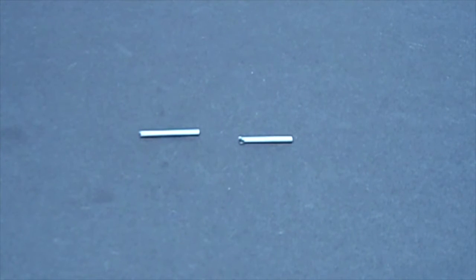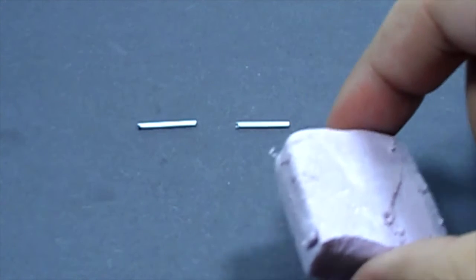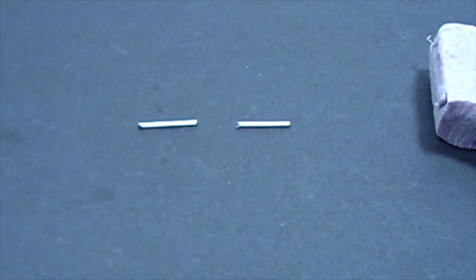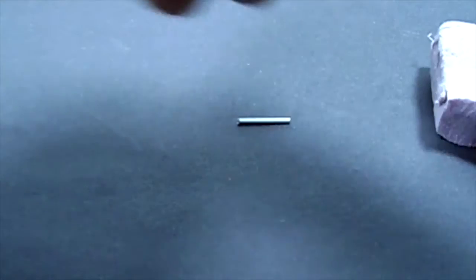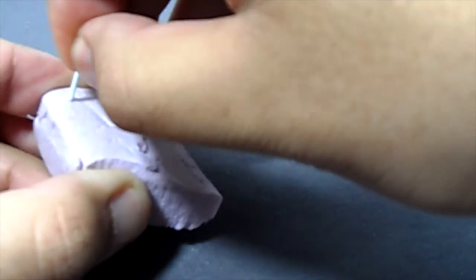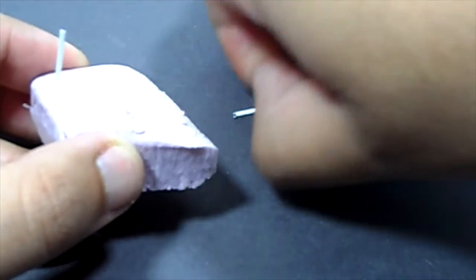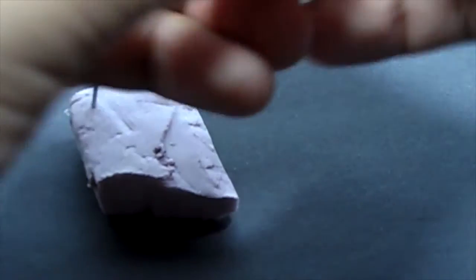Now that we have both pieces cut out, I'm going to show you how to paint it so it looks like a cigarette. I grabbed a scrap piece of foam so I could stick the cigarettes into the foam while they're drying, so I don't have to lay them down and ruin the paint job.